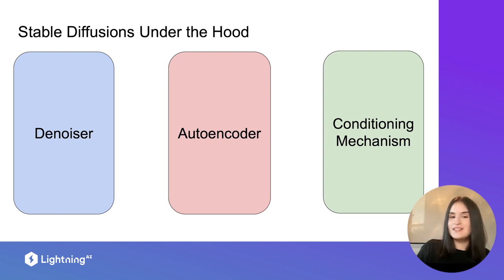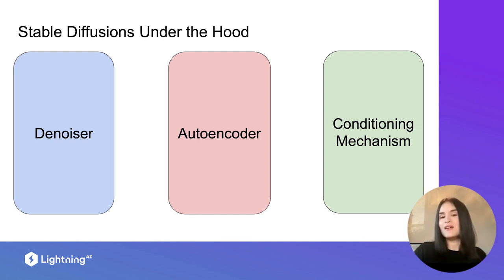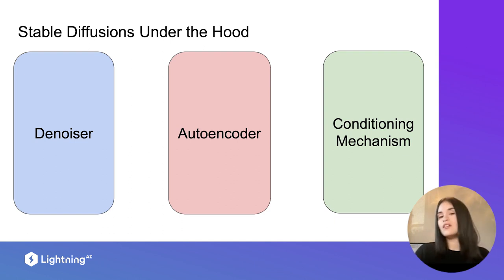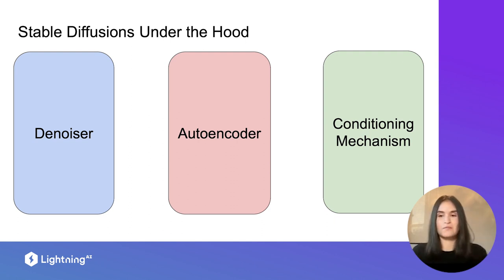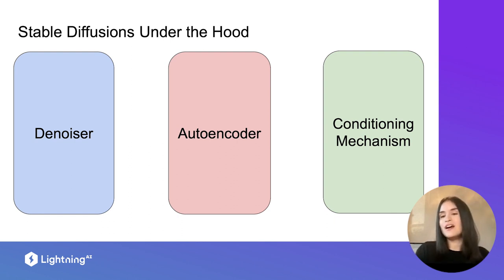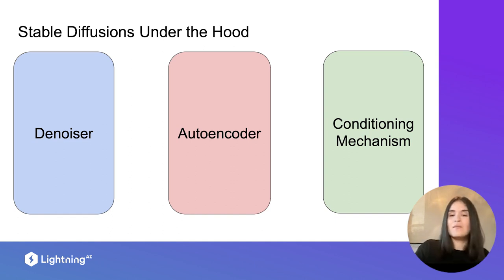The denoiser, as the name says, takes noise away from an image — we'll understand later why we want to do that. An autoencoder encodes information: it takes something in one space, moves it to a smaller space, and then maps it back. The conditioning mechanism controls how our outputs look — without it, we'd have randomness. It's what says 'I want that book baking a cake, not a cat jumping over something.'